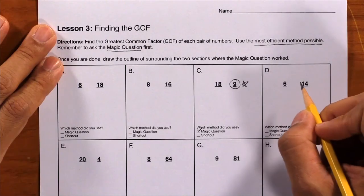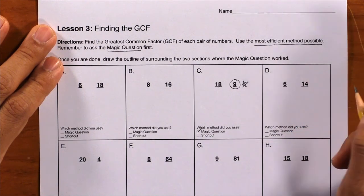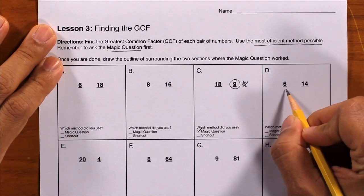Take a look at box D. Find the GCF of 6 and 14. Ask the magic question: can you do 14 divided by 6 evenly? The answer is no, so let's use the shortcut.